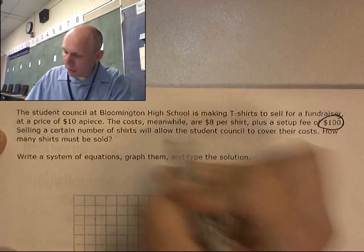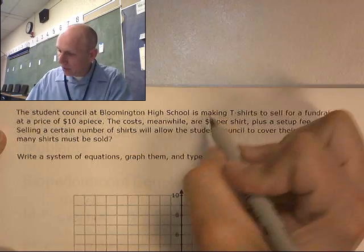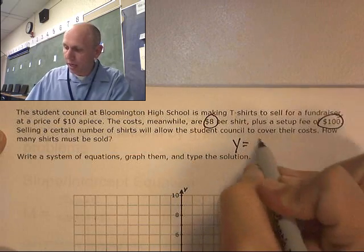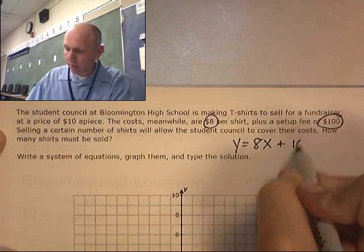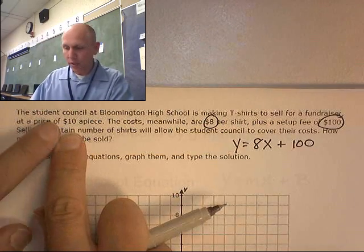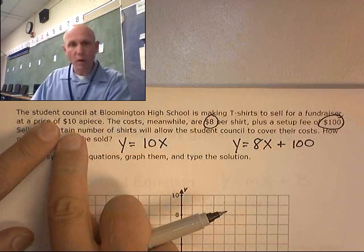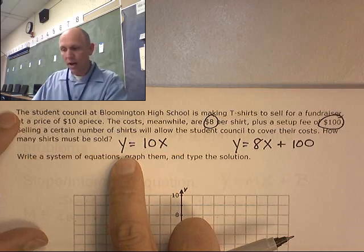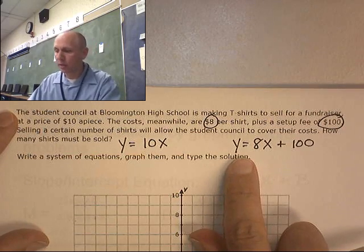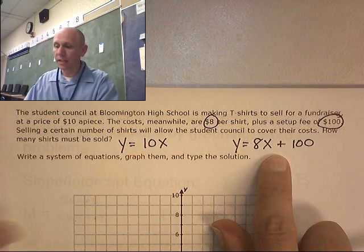And a setup fee of $100. So, initial cost is $100 and $8 per shirt. So, y equals 8x plus 100. And this one is just y equals $10 per shirt. This is the profit. y, their profit, equals $10 per shirt. And over here, their cost is $100 plus $8 a shirt.